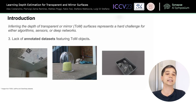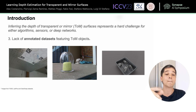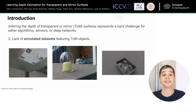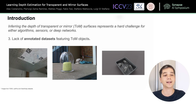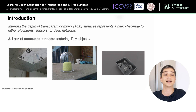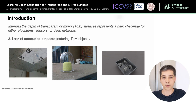Also, deep networks rely heavily on data for effective training, but in this case we're confronted with a shortage of annotated datasets that incorporate information for transparent and mirror surfaces. This limited availability of relevant training data poses a significant challenge when deploying these approaches.